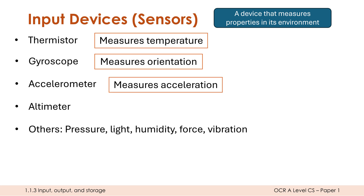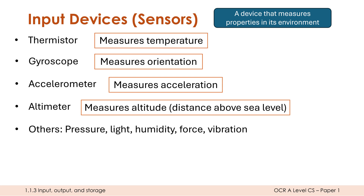An accelerometer is really versatile — it measures acceleration, but you can use changes in acceleration to infer many things. It can determine how many steps you've taken with a smartwatch, whether you've fallen over, or with other sensors help determine your speed. An altimeter measures altitude — distance above sea level. This is used in planes for autopilot, but also at ground level to determine whether you're running uphill, downhill, going upstairs or downstairs.